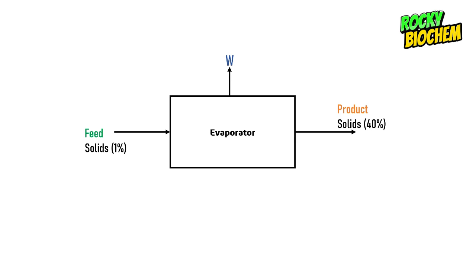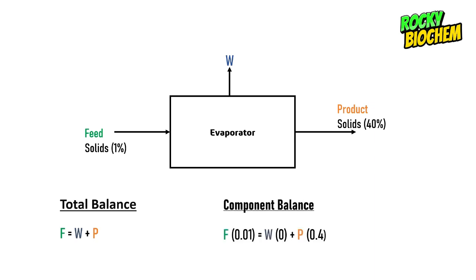So the total balance equation is written as F is equal to W plus P. The component balance equation is written by multiplying the percentage of the components under consideration by the masses of the feed, the water, and then that of the product. We also learned about a situation whereby we bypass some portion of the feed and make it meet up with the output stream from the evaporator to form our final product. If you still have a problem understanding simple evaporator systems as well as bypass systems, kindly check out my previous videos on them.